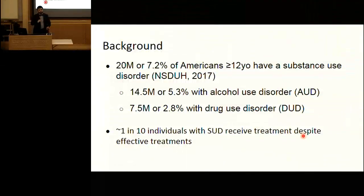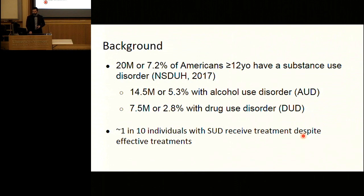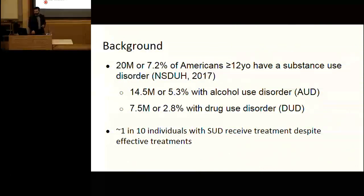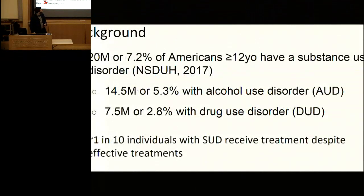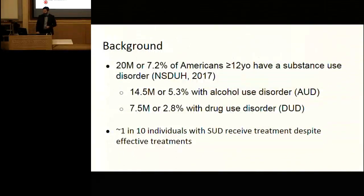About 7.2% of Americans aged 12 or older have evidence of a substance use disorder, according to the National Survey on Drug Use and Health. 5.3% had an alcohol use disorder and 2.8% a drug use disorder — the sum exceeding 7.2% because individuals often have concomitant disorders. As many as 90% of individuals with substance use disorder across substances don't receive treatment.